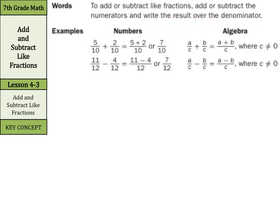So, when we have 5 tenths plus 2 tenths, we add the numerators 5 plus 2 to get 7, and we keep the denominator at 10 since it's in common. With variables, if it's A over C plus B over C, we keep the C because that's in common, and we just do A plus B.